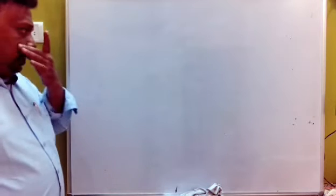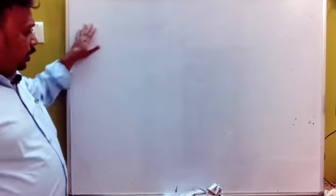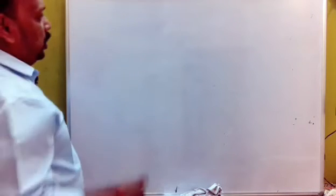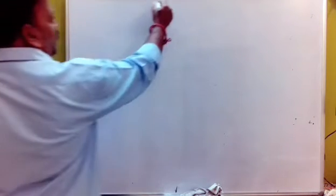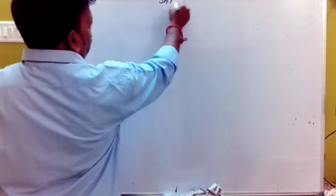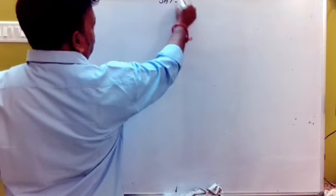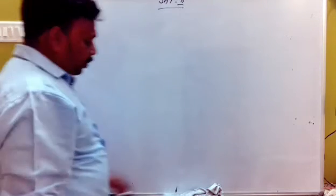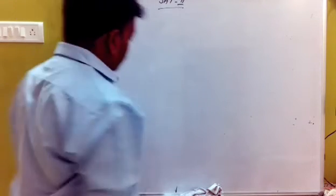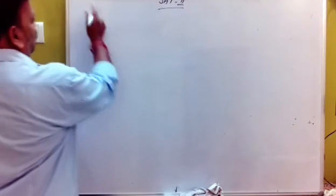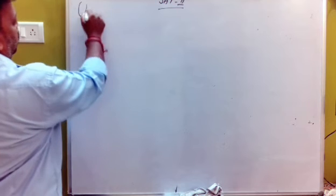Now we are going to do Statistics 2. We will answer the question. In Statistics 2, the sum — that is the uniform distribution. We will answer the formula.